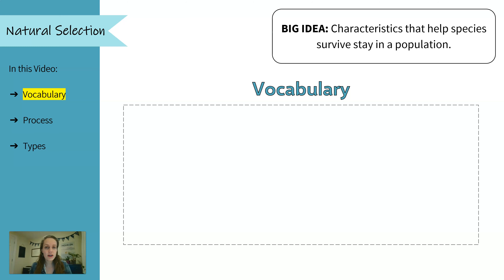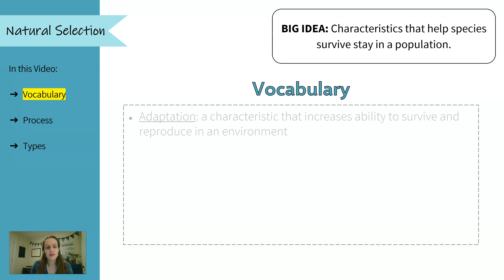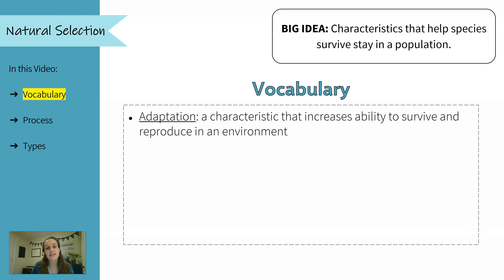We're going to start off today with a little bit of vocabulary. Our first word is adaptation, which is a characteristic that increases an organism's ability to survive and reproduce in an environment. The 'in an environment' piece is important because some characteristics might help survival in some environments but not in others.